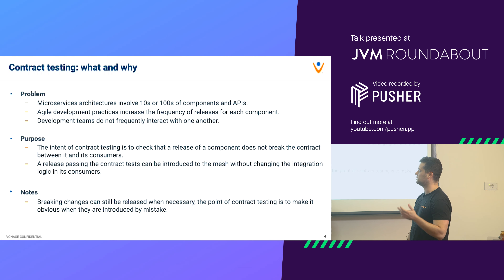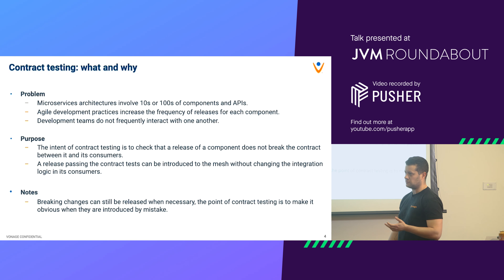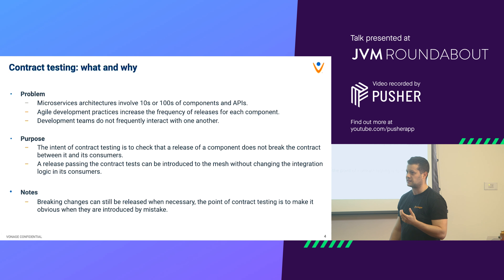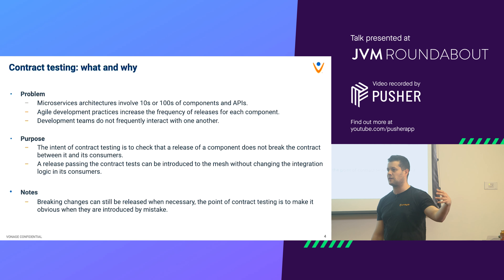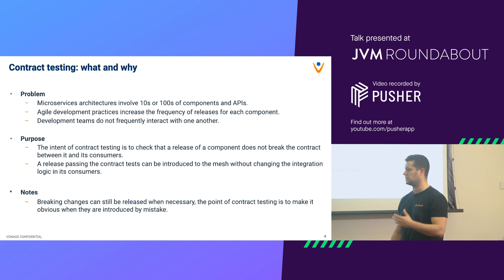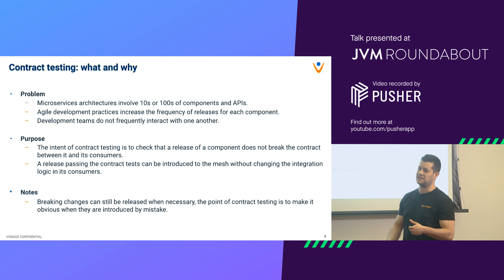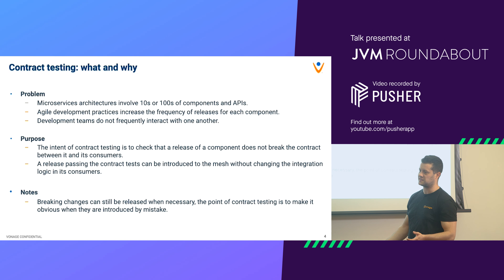The purpose of contract testing is to make sure a release of a component is not going to break the contract that its customers rely on. If a release passes this test, you have guarantees that existing consumers can still consume your API during and after the release. Breaking changes happen, but the point is to make them intentional — you don't want to break things accidentally.